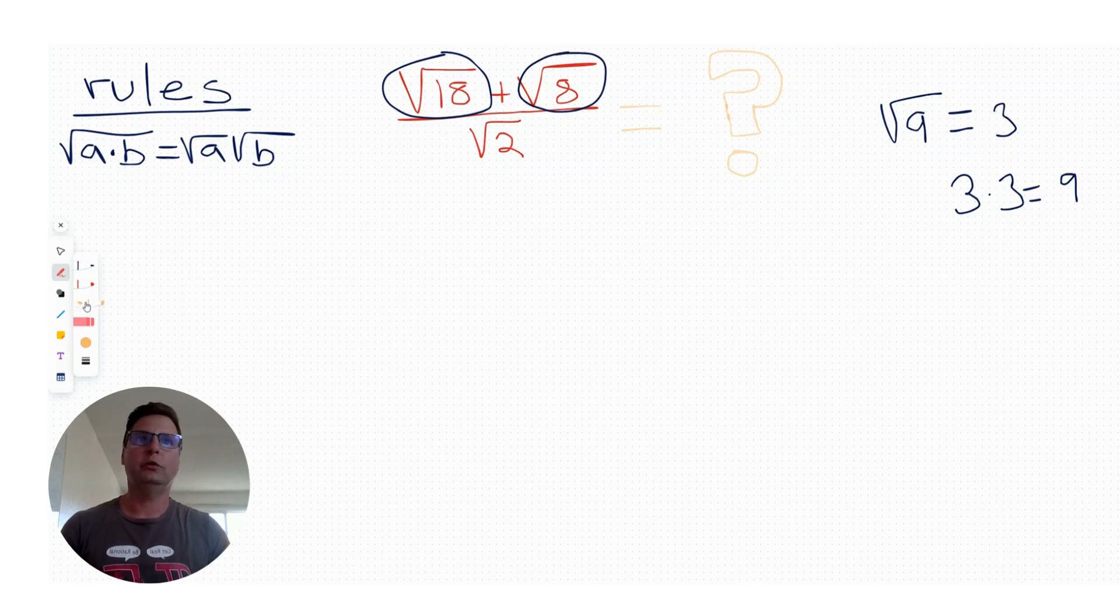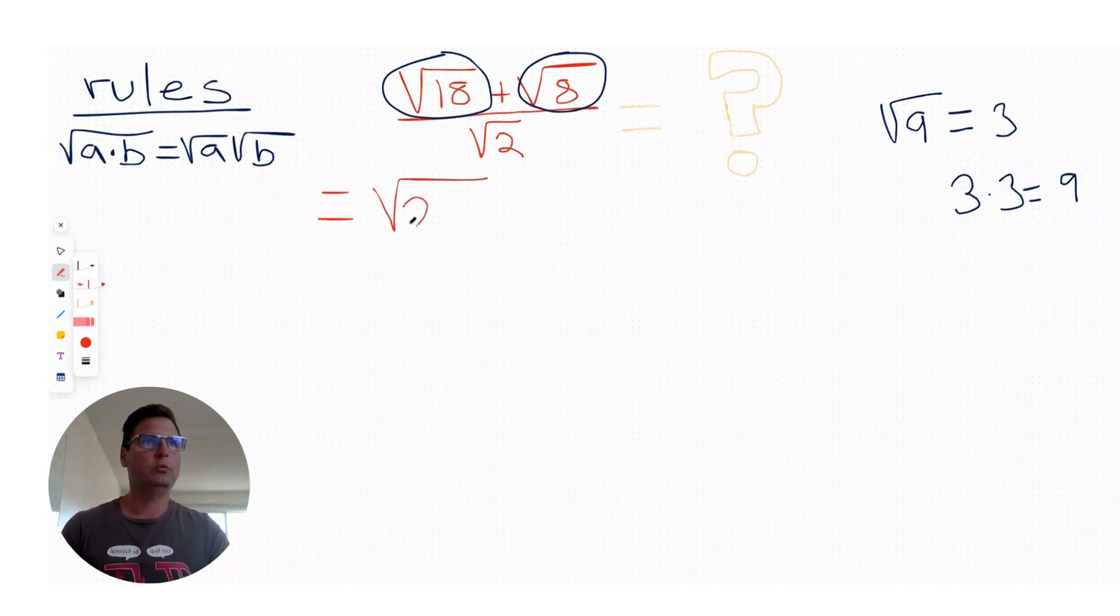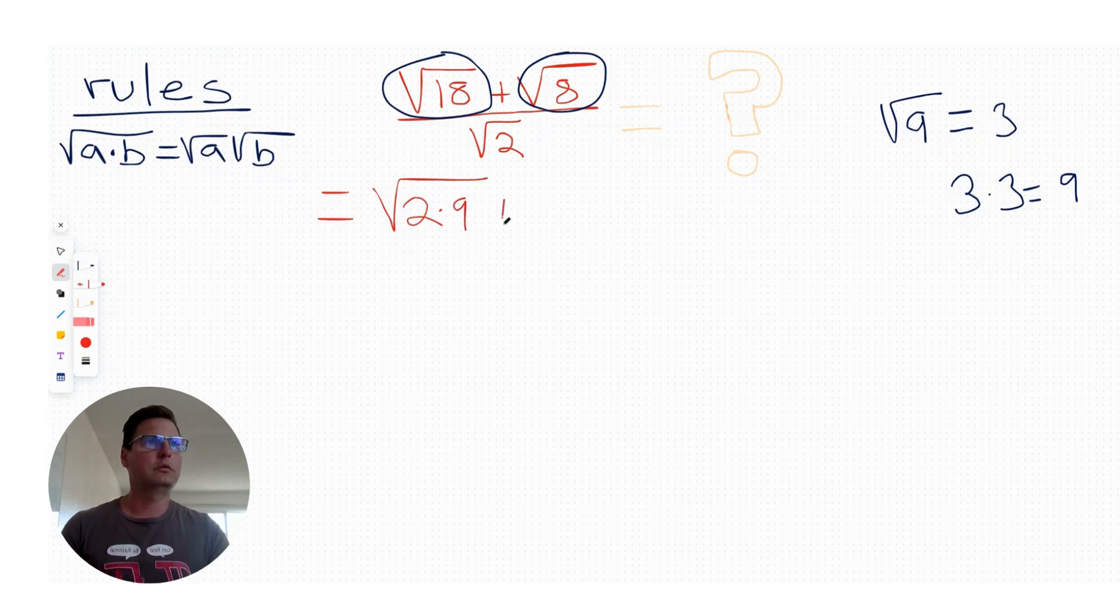So maybe we can use that information to simplify this and maybe this. So what would that be? Let's rewrite this. Can we come up with two numbers to multiply together to get 18? How about 2 times 9? And then, can we do the same for this one? What about 2 times 4? Let's not forget about our denominator, square root of 2 at the bottom.